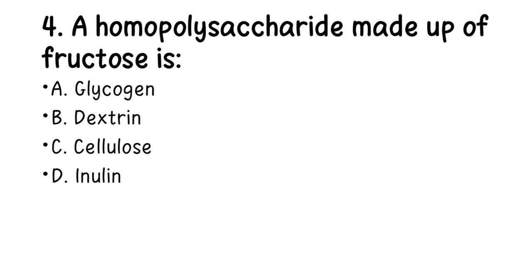Number 4. Homopolysaccharide made up of fructose is: A. Glycogen, B. Dextrin, C. Cellulose, D. Inulin. You should know what a homopolysaccharide is before you can answer this question. The right answer is inulin. A homopolysaccharide is a large carbohydrate molecule made up of the same monomeric unit. Inulin is made up solely of fructose molecules — homo means the same.